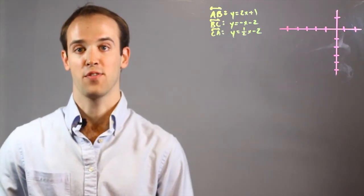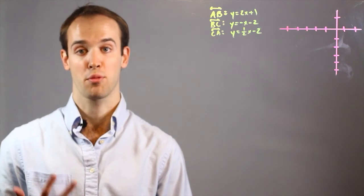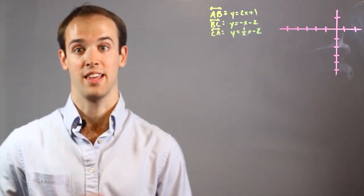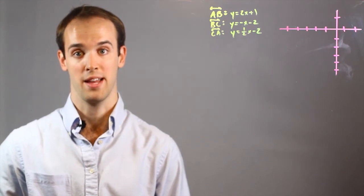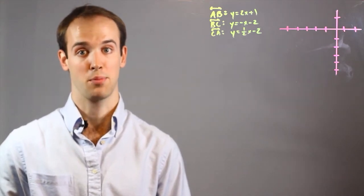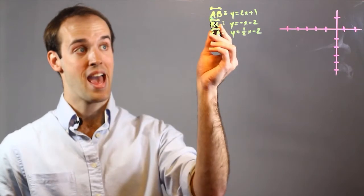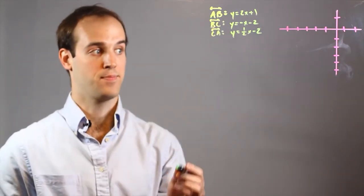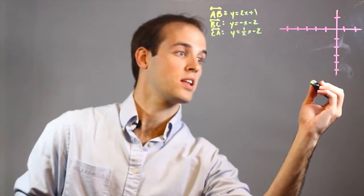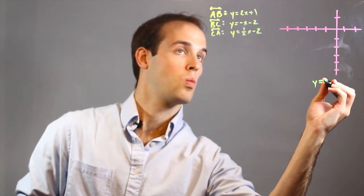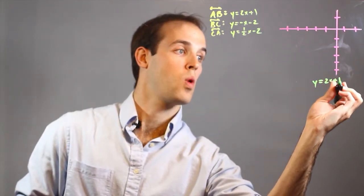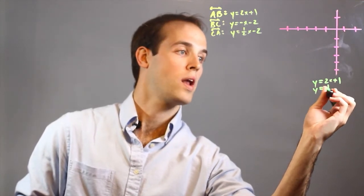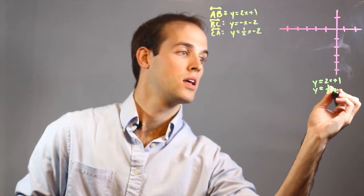To find the points of this triangle, we're going to need to set up three separate systems of equations, which are used to find the intersection point where two lines will meet. And I'm going to need to do that three separate times. So point A must meet at the intersection of AB and CA. So my system of equations is going to look like this: y equals 2x plus 1, and under that I'm going to write y equals one half x minus 2.